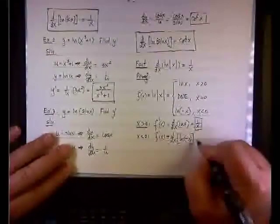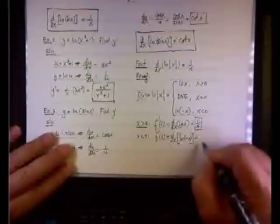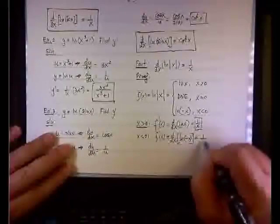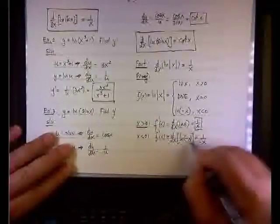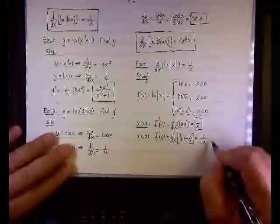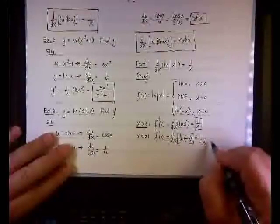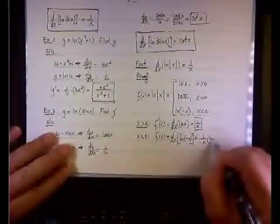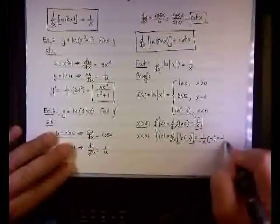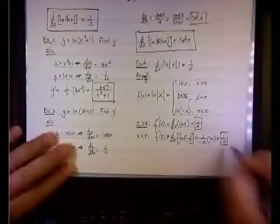So we end up having 1 over u, which is 1 over negative x, times du dx, which is negative 1. So we are back to having 1 over x.